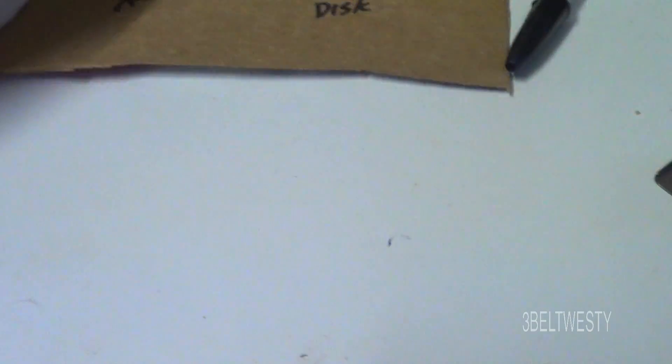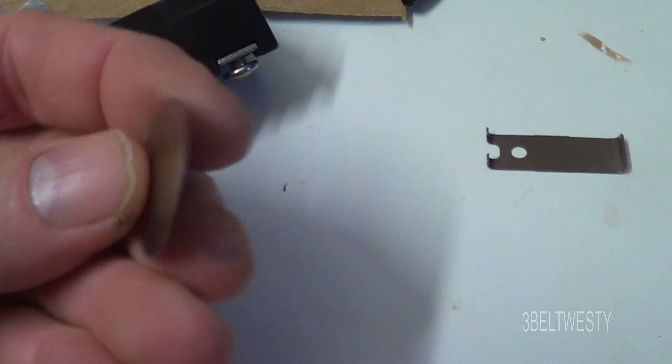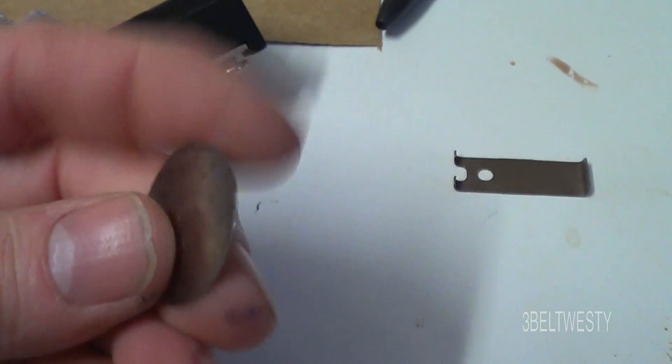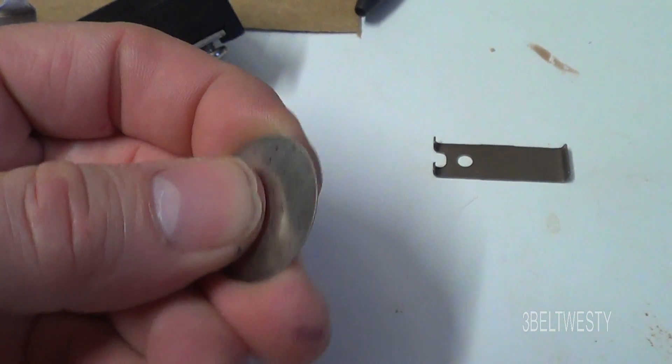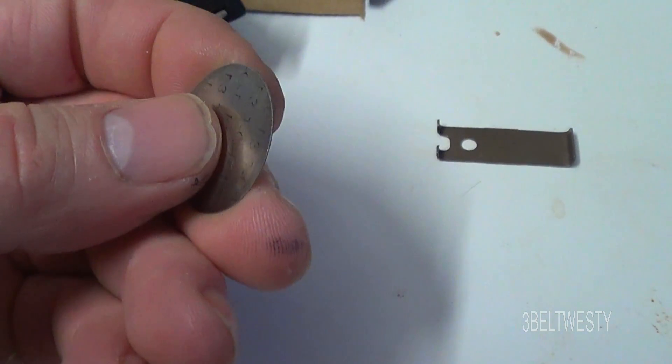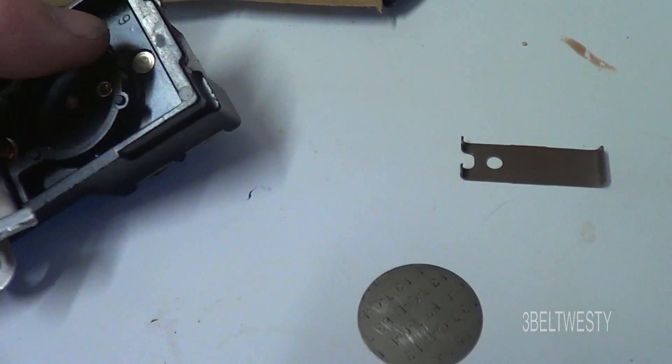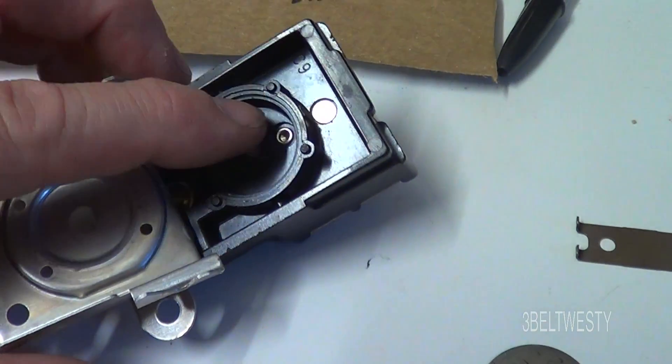And before I show the diagram, the way it works is there's a bimetallic strip here, about the size of a quarter. It's got two materials, so when it gets hot it clicks one way. That sits in this pocket here, right here.